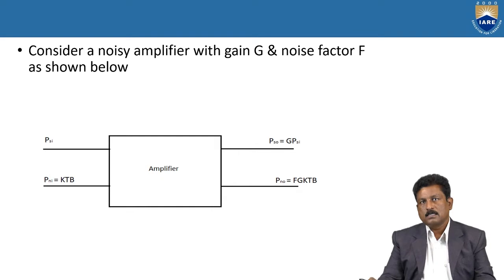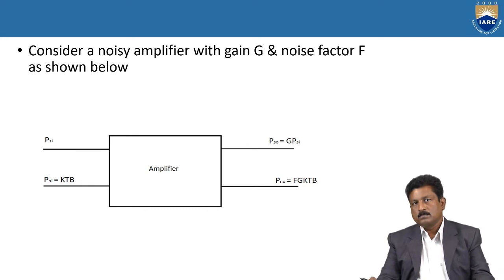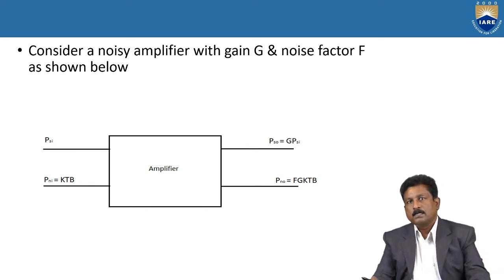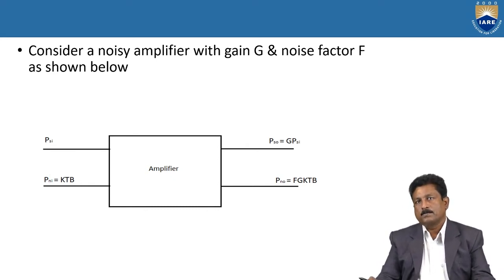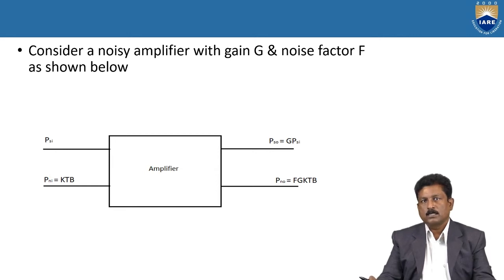Consider a noisy amplifier with gain G and noise factor F as shown below. At the input: PSI and PNI, expressed in terms of KTB (temperature). At the output: PSO and PNO. Based on the power calculations of the input side and output side, we can easily calculate the noise factor F.